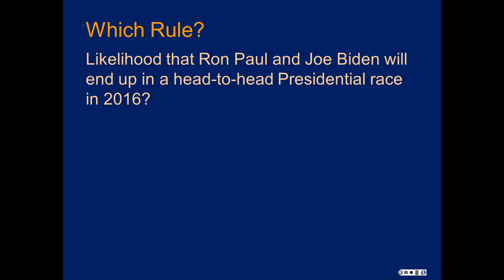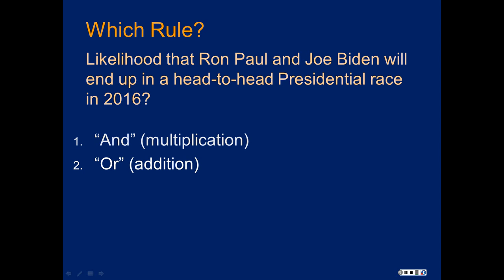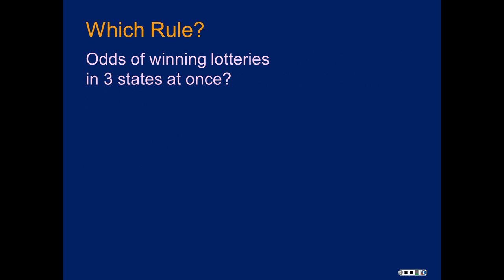What's the likelihood that Ron Paul and Joe Biden will end up in a head-to-head presidential race in 2016? Here's the key — you can't always go on keywords, but here we have an AND. So this is going to be a multiplication situation: that Ron Paul will end up there and Joe Biden will end up there. We would multiply those two probabilities if we could figure them out. But we're not Nate Silver, so we probably can't.